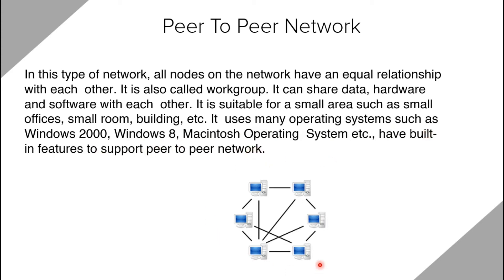As you can see in the diagram, a peer is a self-sufficient computer. Each computer can share data with any other computer, and a peer acts as both client and server — everyone can share their data with each other. It is a network model where resource sharing, processing, and communication control are completely decentralized — not centralized upon any particular servers or hosts.